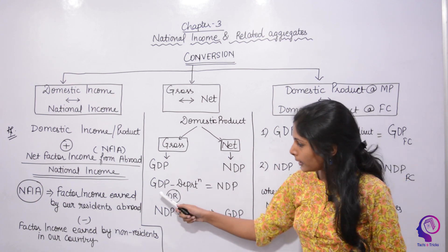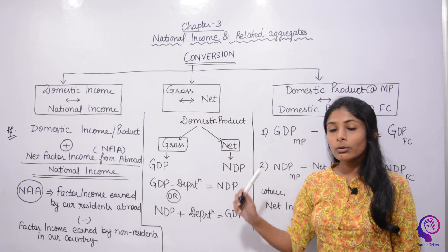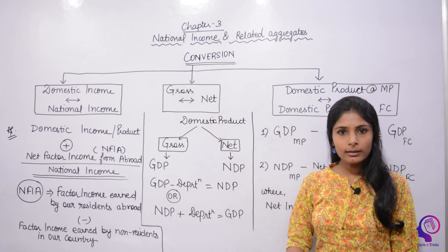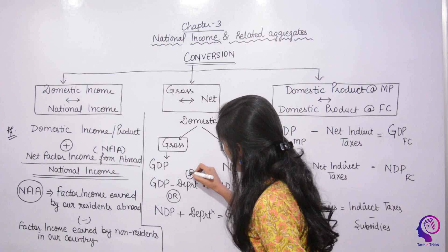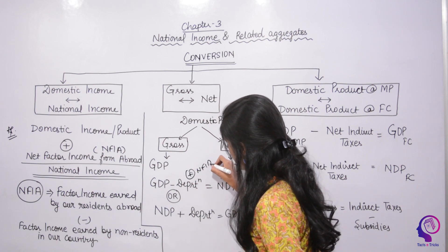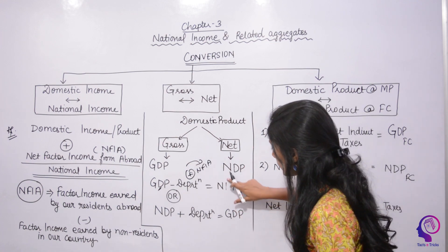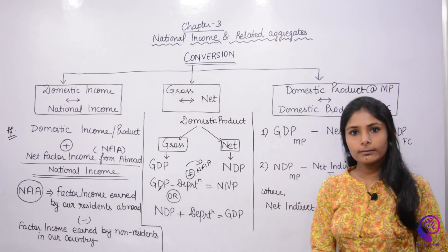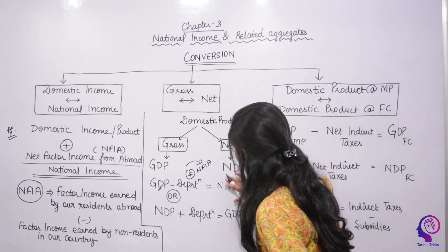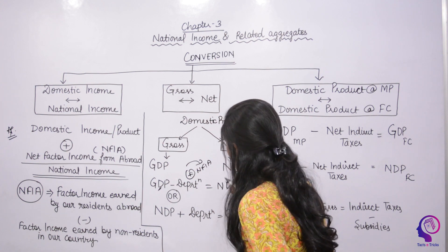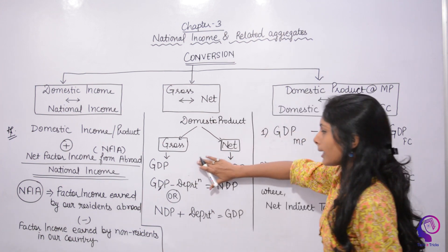Note that the domestic product stays the same — I haven't done anything with NFIA here. If I add NFIA, then domestic becomes national, and this will become NNP. So just understand: when we subtract depreciation from gross, our concept becomes net. And if you want to go from net back to gross, you simply add depreciation back.